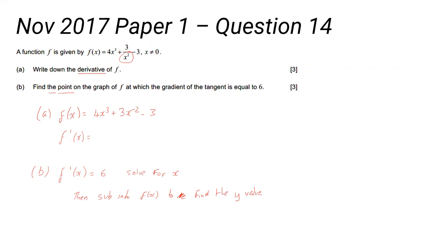And then the final thing is it doesn't say find the x coordinate, it says find the point. So you need the y value as well. So you need to put that back into the original function. Notice we're subbing into f(x), not f prime x, because we want the y coordinate, not the gradient.